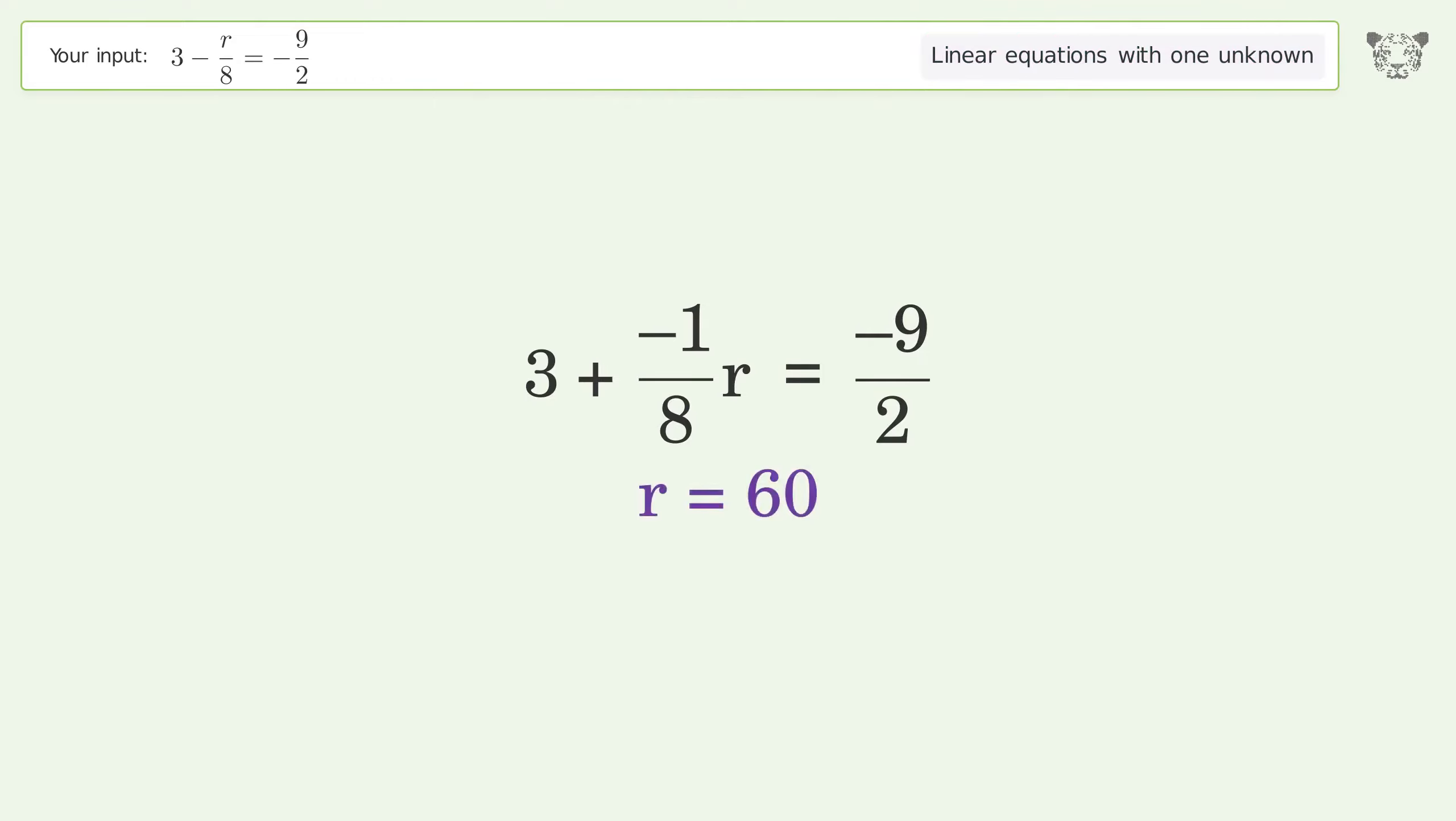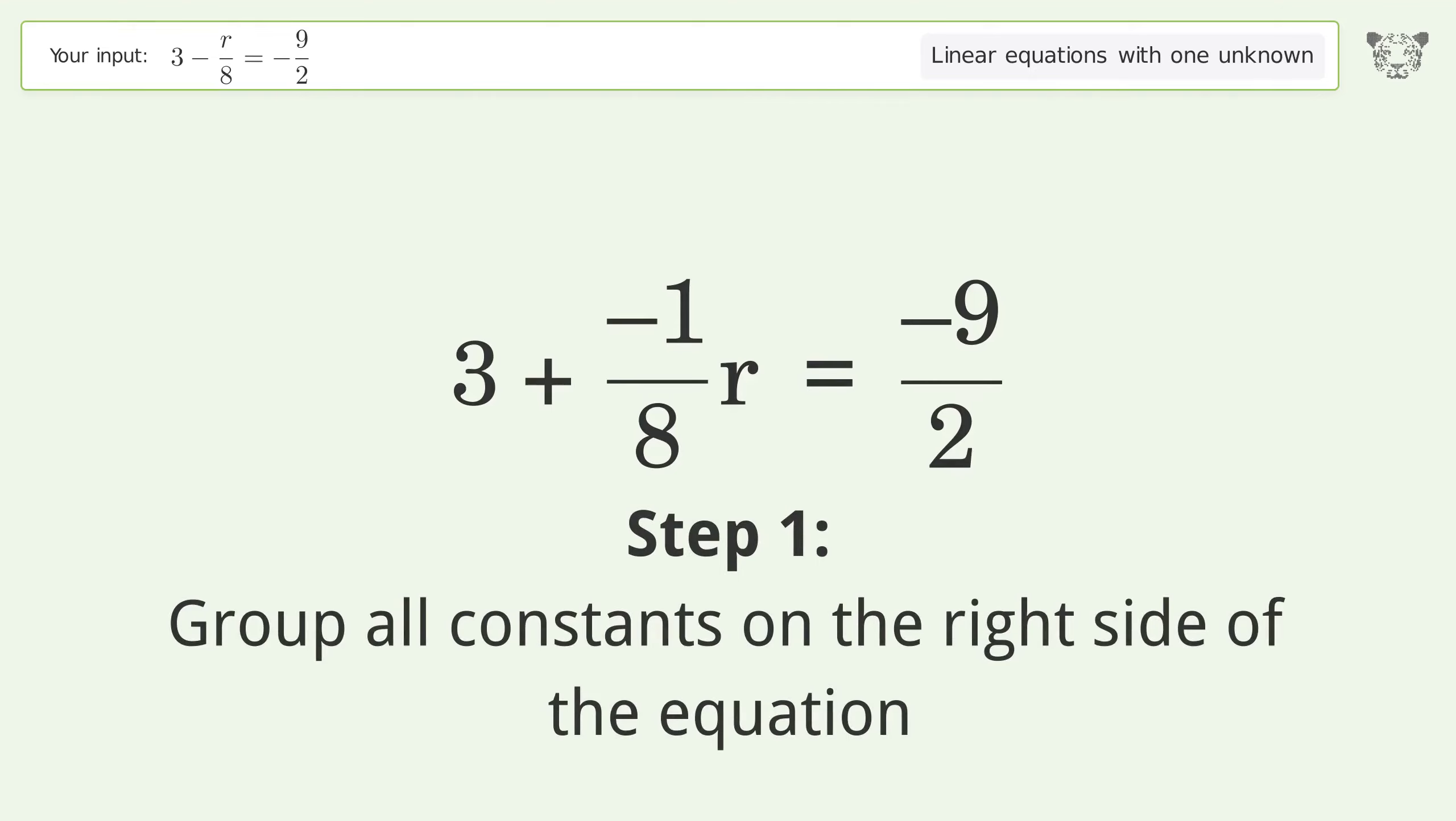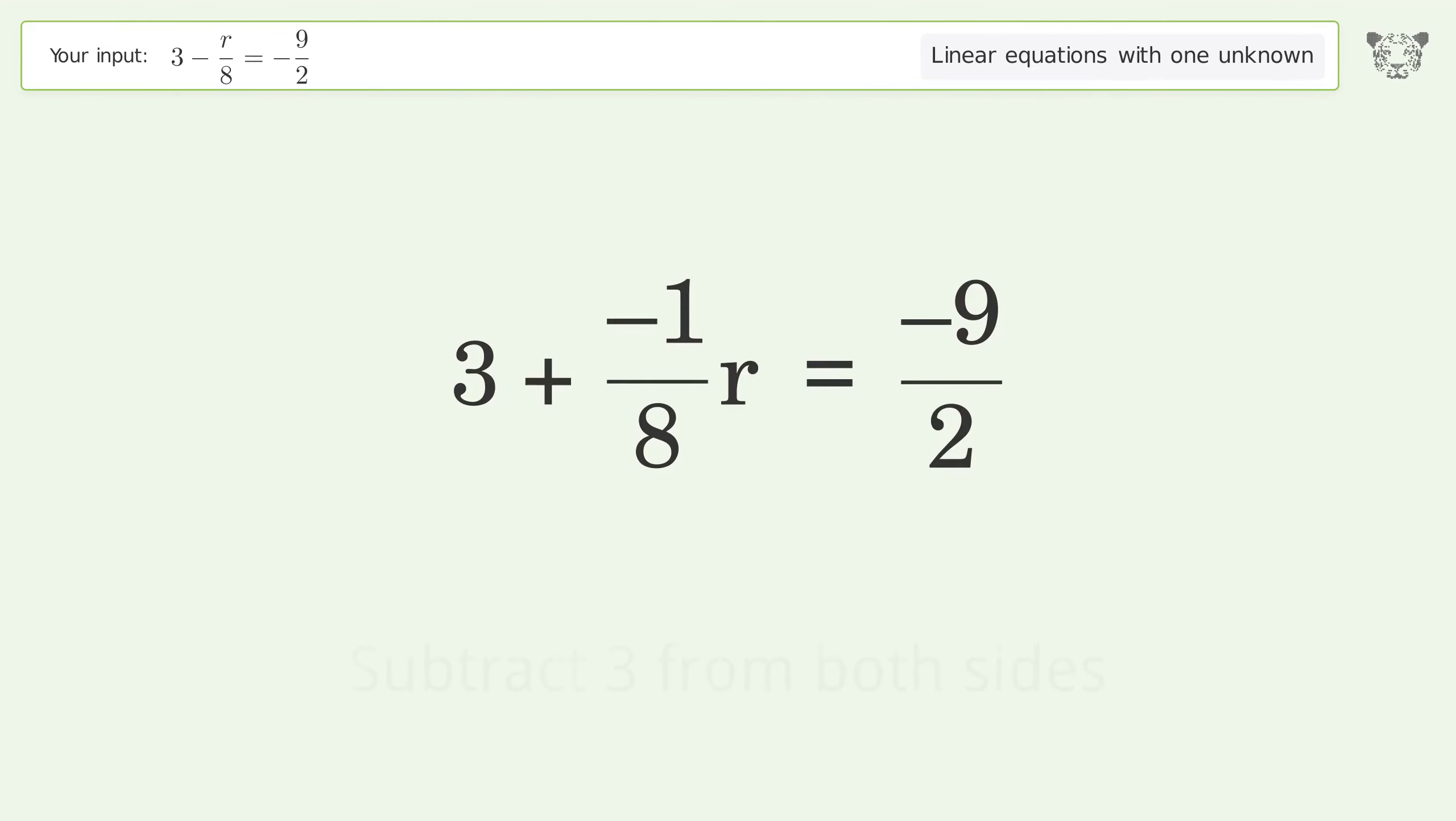Tiger will solve this linear equation with one unknown. The final result is r equals 60. Let's solve it step by step. Step 1: Group all constants on the right side of the equation.